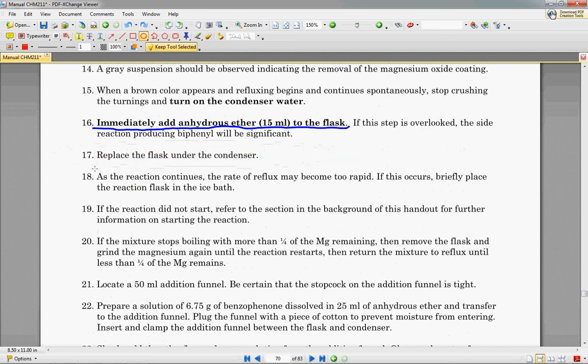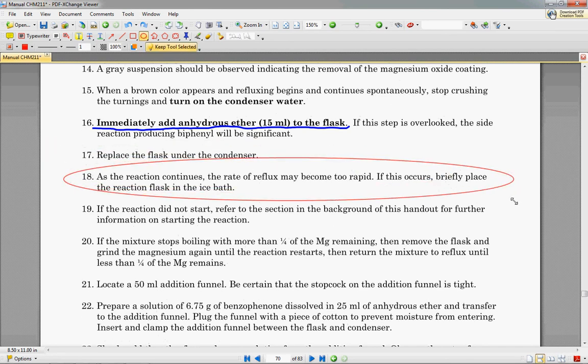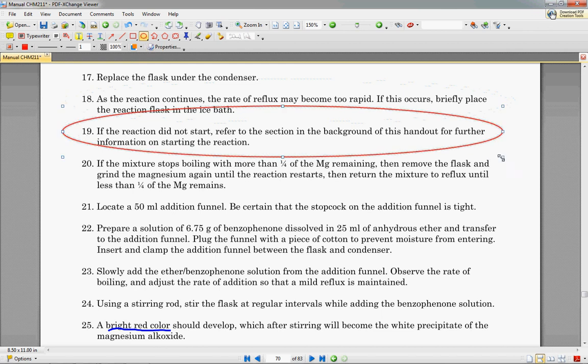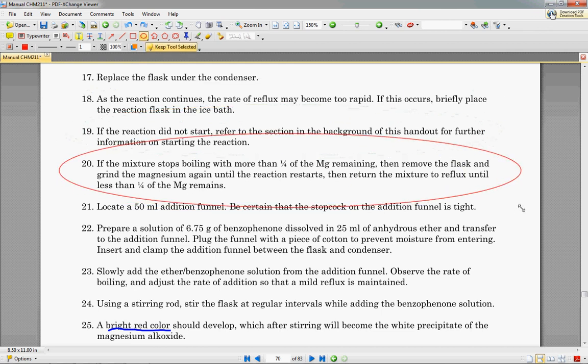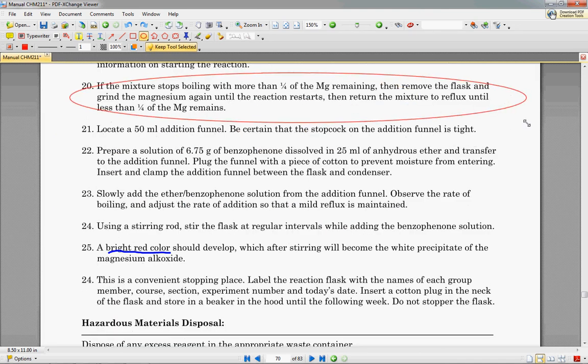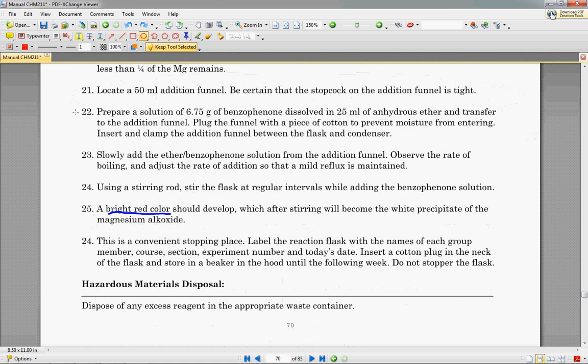So, all right, where were we? So then you replace the flask under the condenser. As the reaction continues, the rate of reflux may become too rapid. Like I said, then you can put it in the ice bath. If the reaction does not start, go to the troubleshooting section and ask for my help or ask for my help. If the mixture stops boiling while there's still some magnesium remaining, more than one quarter of the initial magnesium, then remove the flask and grind the magnesium until the reaction starts again.